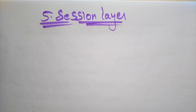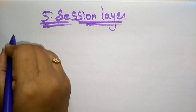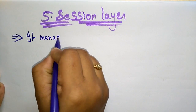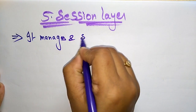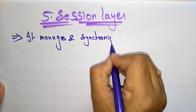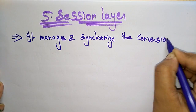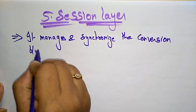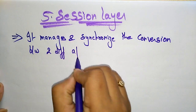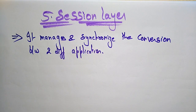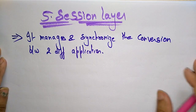Hi students. Now coming to the next layer, that is the fifth layer in the OSI reference model — the session layer. So what does this session layer do? It manages and synchronizes the conversation between two different applications.